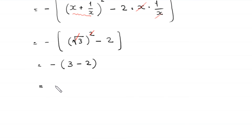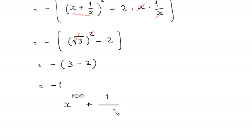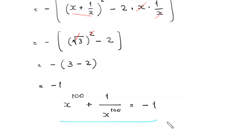This gives negative times 1, so x to the power 100 plus 1 over x to the power 100 is equal to negative 1. This is the final answer of this problem.